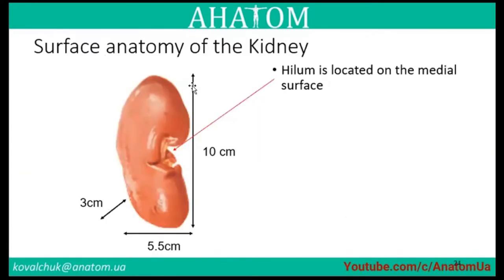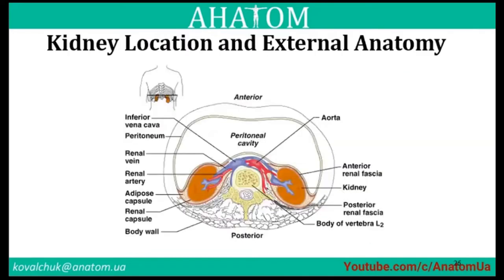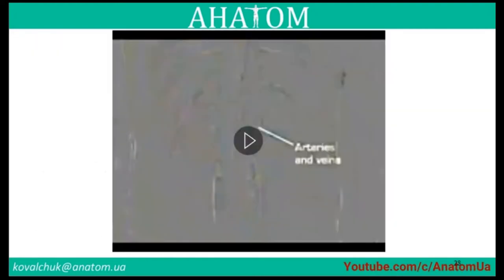The anatomy of the kidney: the hilum is located on the medial surface. Protection of the kidney consists of three layers of connective tissue: the inner layer is the renal capsule, the middle layer is the adipose capsule, and the outer layer is the renal fascia. The kidney is located in the retroperitoneal space, within a special adipose capsule as shown in transverse section.